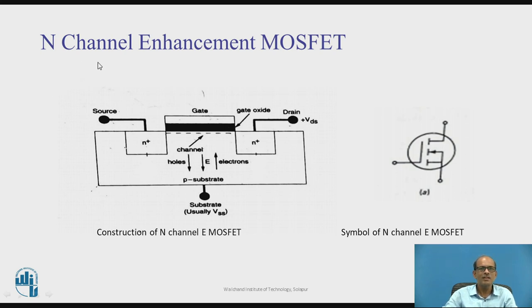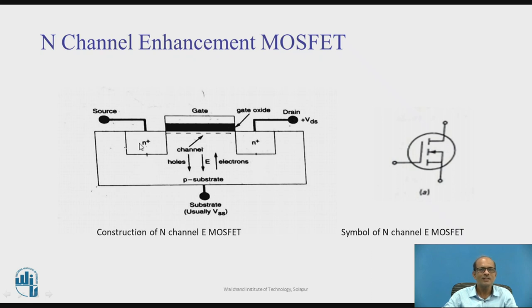The figure shows the N-channel Enhancement MOSFET. This is the construction diagram and the right-hand side is the symbol. In the construction, a P-type substrate is taken as the base material. On to this P-substrate, two heavily doped N-regions are obtained by diffusion. One of these is called the drain and the other is called the source. And in between drain and source, whatever is available, that we call the channel.